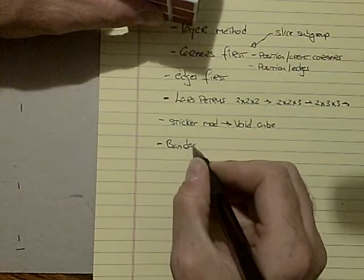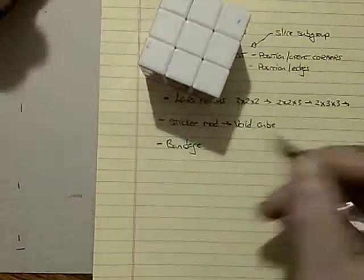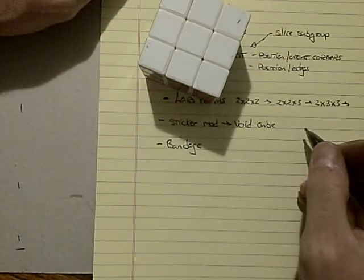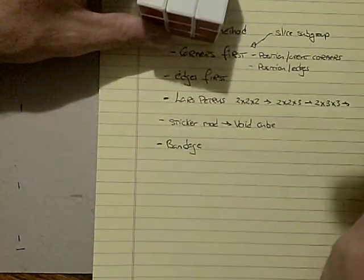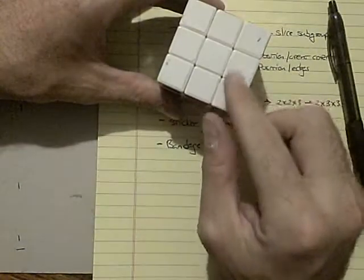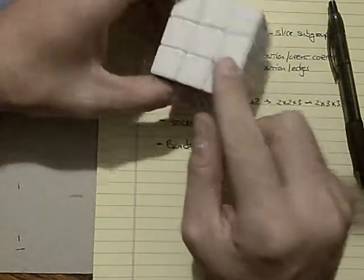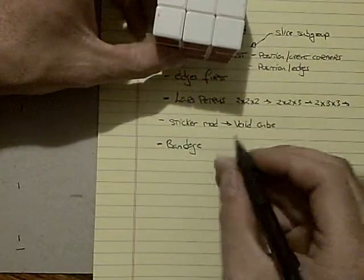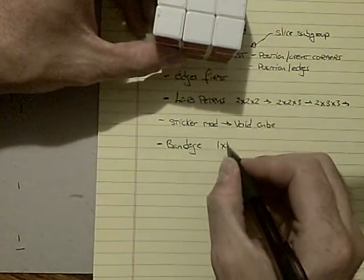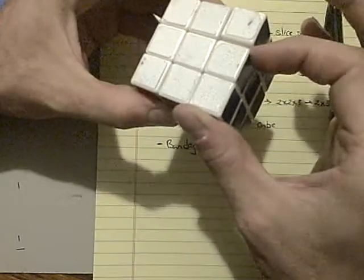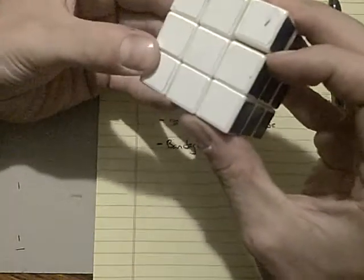Another challenge which is good for developing some of these techniques or commutators and conjugates is a bandaged cube. Take some transparent tape, some scotch tape, and go ahead and tape a little 2x1, sorry, a 1x1x2.